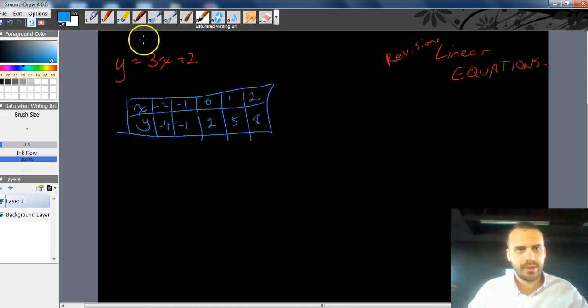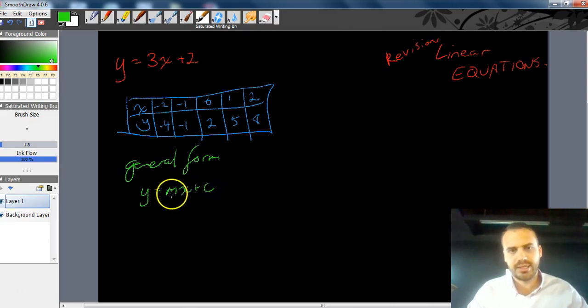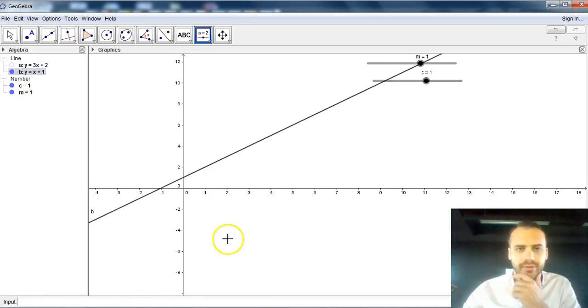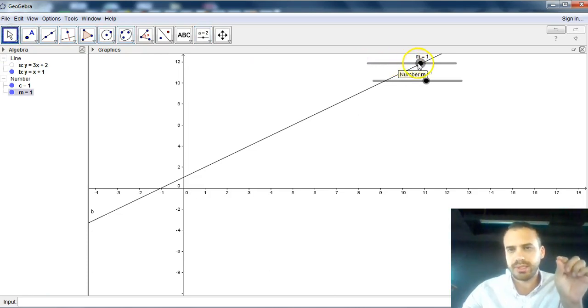Now, you should also remember that the general form can be written as y equals mx plus c, where m and c are numbers of some sort. Let's take a look. You can see I've got an m slider here and a c slider here. Now, if I type y equals mx plus c, I'll get a function that looks like this.